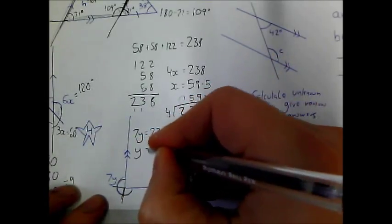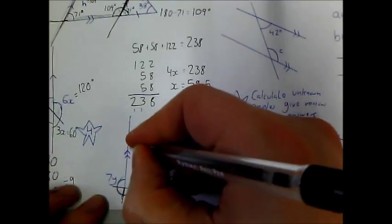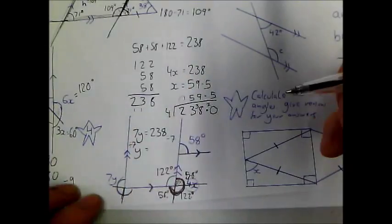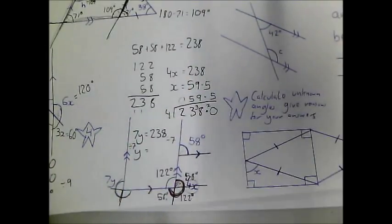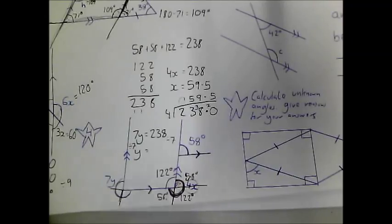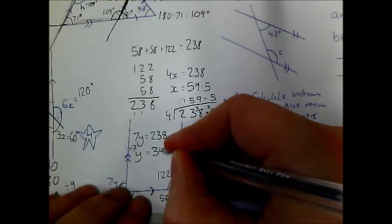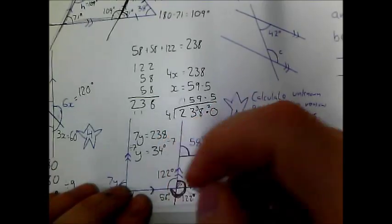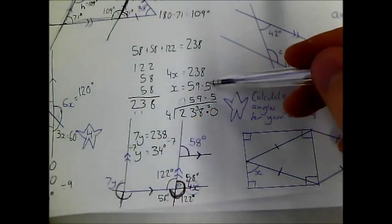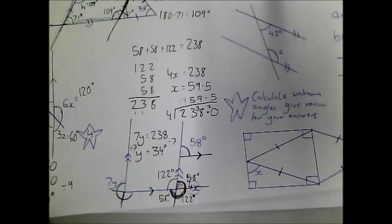To work out y, you divide by 7. Using a calculator, that gives you 34. So x is worth 59.5 and y is worth 34 degrees.